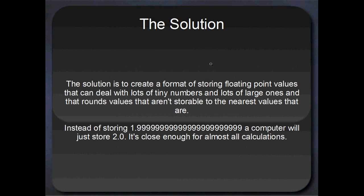So the solution is to create a format of storing floating point values that can deal with lots of tiny numbers and lots of very large numbers, and it rounds them to the nearest values. So instead of storing 1.9999, the computer will actually round it and just store 2.0. It's close enough for just about all calculations, and it's pretty quick.